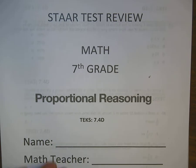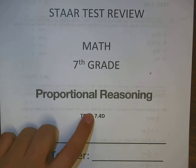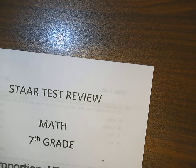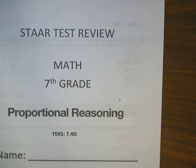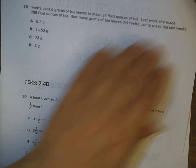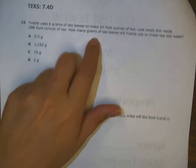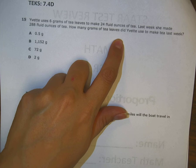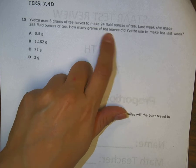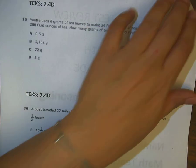Okay, looking at proportional reasoning, TEKS 7.4D. We'll open that up and start working. It says on page one, Yvette uses 6 grams of tea leaves to make 24 fluid ounces of tea. Last week she made 288 fluid ounces of tea. How many grams of tea leaves did Yvette use to make tea last week?